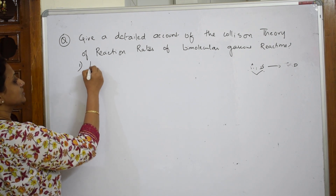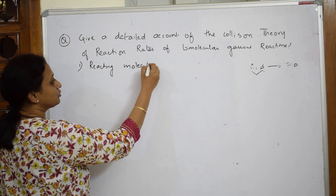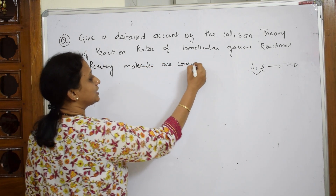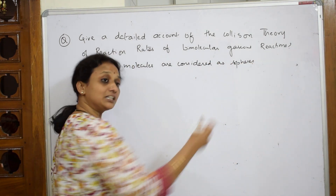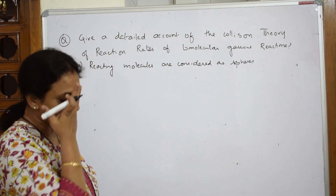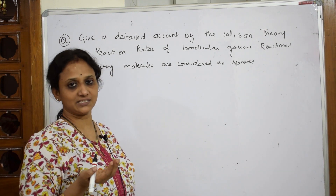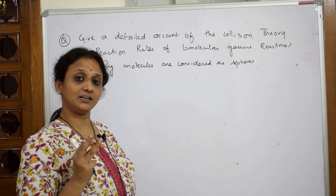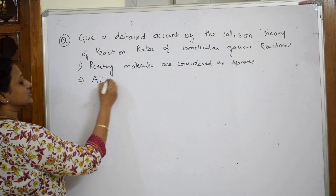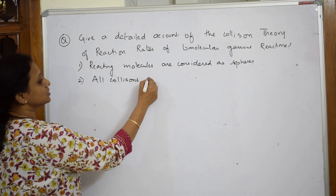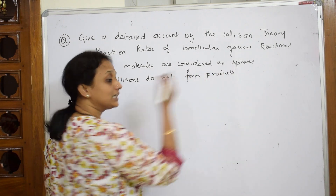According to collision theory, the reacting molecules are considered as spheres. When considering the reacting molecules as spheres, then only effective collisions are going to occur. These reacting molecules have to collide, and then only they are going to form products. But remember, all collisions do not form products — this is the most important point.